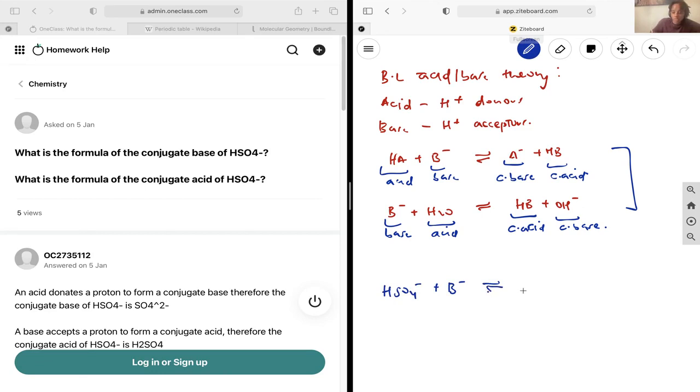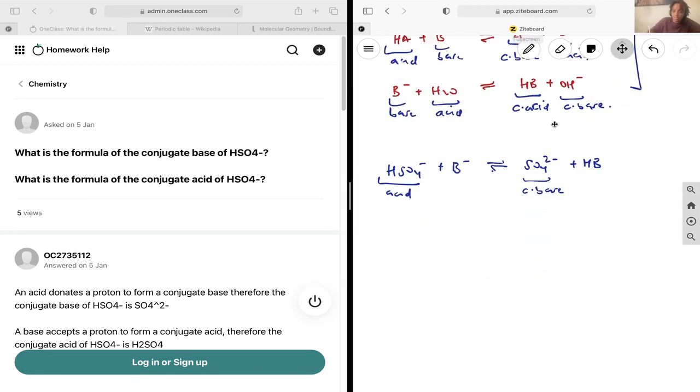This is going to give me SO4 2- plus HB. Since this is my acid, this is going to be my conjugate base. So the conjugate base of HSO4- is going to be the sulfate ion.